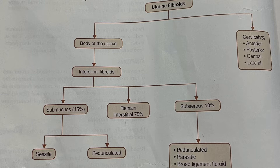From the body of the uterus arise the interstitial or intramural fibroids. These are divided into three types: submucosal fibroids accounting for 15%, interstitial fibroids 75%, and subserosal fibroids 10%. Submucosal fibroids can be either sessile or pedunculated, and subserosal fibroids can be pedunculated, parasitic, or broad ligament fibroid.